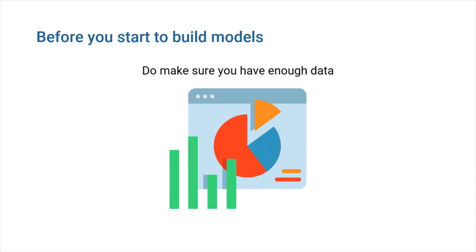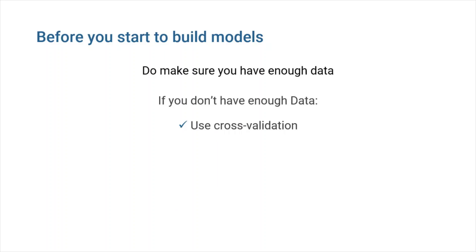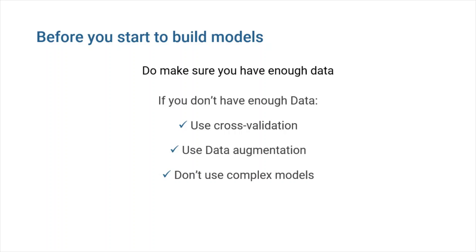Do make sure you have enough data. If you don't have enough data, then it may not be possible to train a model that generalizes. This depends on the signal-to-noise ratio in the dataset — if the signal is strong, you can get away with less data; if it's weak, you need more data. Cross-validation can help you make better use of what you have. You can use data augmentation techniques to boost small datasets, and it's also useful where you have limited data in certain parts of your dataset. With little data, you'll probably need to keep the complexity of your machine learning models to a minimum to avoid overfitting with too many parameters.